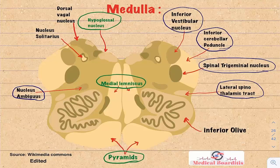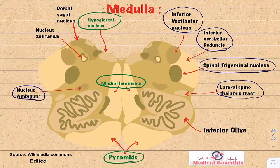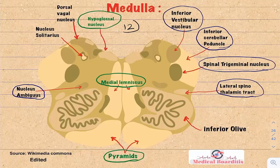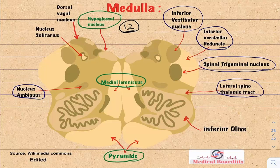This is a cross-section of the medulla. Structures in the medial medulla include the hypoglossal nucleus (cranial nerve 12 — medial per our rule), the medial lemniscus (continuation of the dorsal columns carrying vibration and position sense), and the pyramids (corticospinal tracts — lesion causes spastic paralysis).